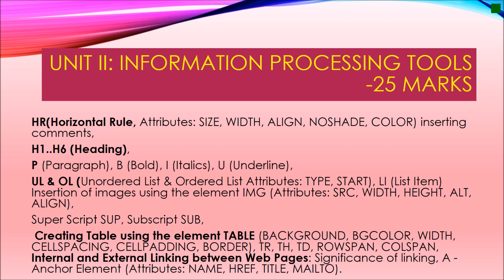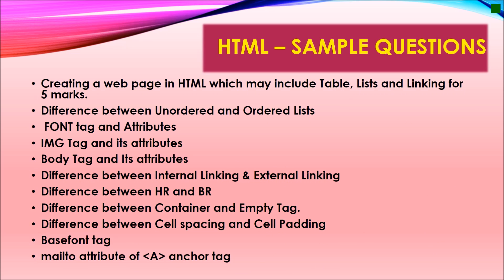Creating tables using table elements like background, background color, cell padding, colspan, and rowspan is also part of the curriculum. Sample questions include creating a complete web page using HTML which may include table, list, and linking for 5 marks. Differentiation questions can be asked on: ordered and unordered list, font tags and attributes, image tag and attributes, body tag attributes, internal and external linking, HR and VR, container and empty tags, cell spacing and cell padding, rowspan and colspan, base font tag, and the mailto attribute of the anchor tag.